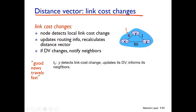For example, at connector time, Y detects a link cost change, updates its distance vector, and informs its neighbors. If there is a distance vector change, if there is a connection to the neighbor, then the neighbor X or Z can transmit or advertise.